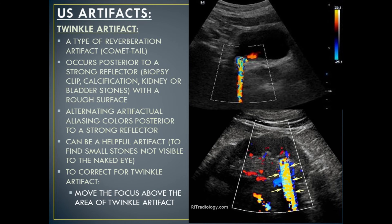Twinkle artifact is the next type of ultrasound Doppler artifact. Twinkle artifact is a type of reverberation artifact, specifically comet tail artifact. It occurs posterior to a strong reflector with a rough surface, such as a biopsy clip, calcifications, or kidney or bladder stones. Twinkle artifact appears as alternating artifactual aliasing colors posterior to the strong reflector. This can be a helpful artifact to find small stones not visible to the naked eye. To correct for a twinkle artifact, move the focus above the area of the twinkle artifact.